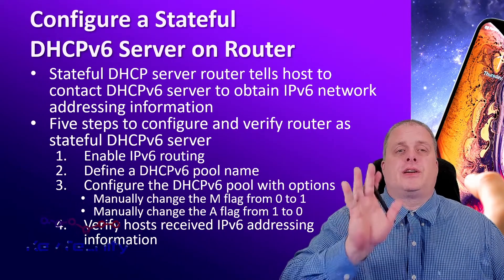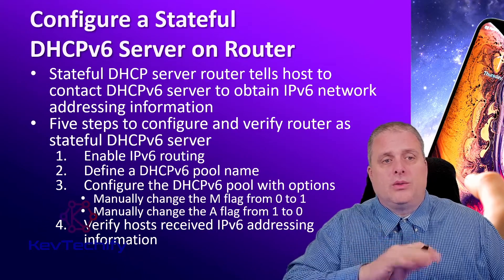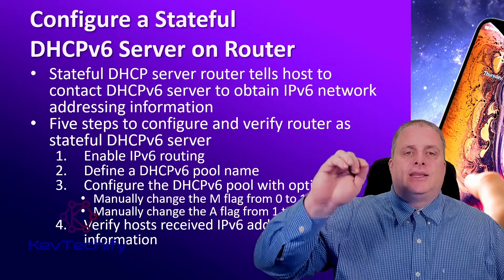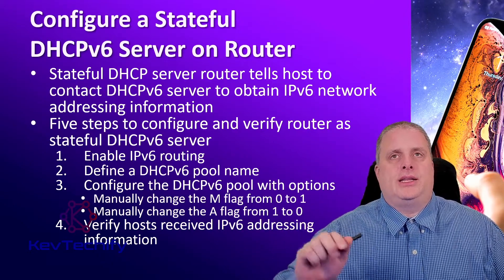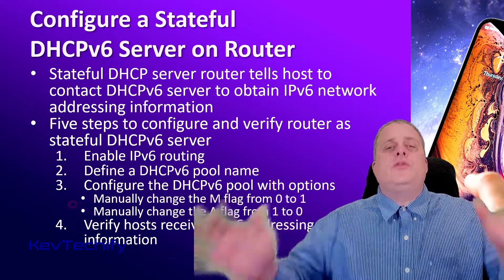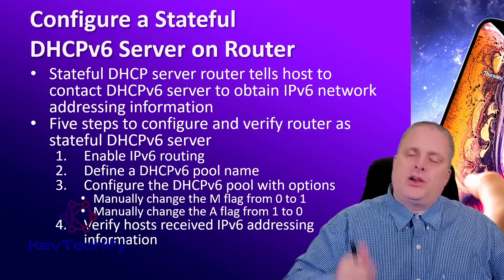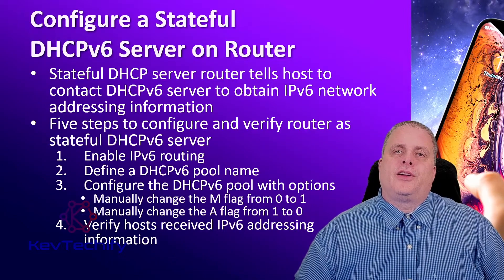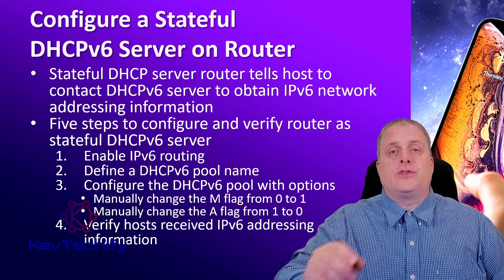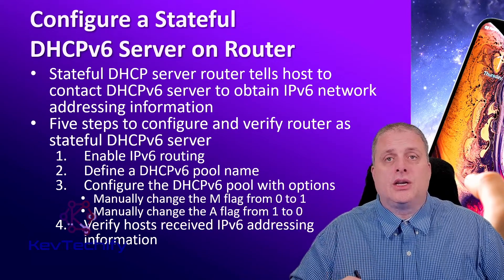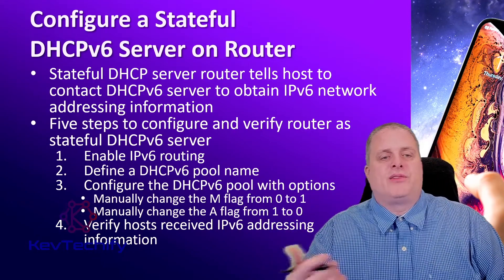To configure a stateful DHCP version 6 server on a router, we do have several steps. What this does is it tells the host to contact the DHCP version 6 server to obtain all of your IPv6 addressing information. You're going to get the address from there, and any configuration information. That server will then keep track of your address, what MAC address you have, what addresses are being used, and what addresses are available.